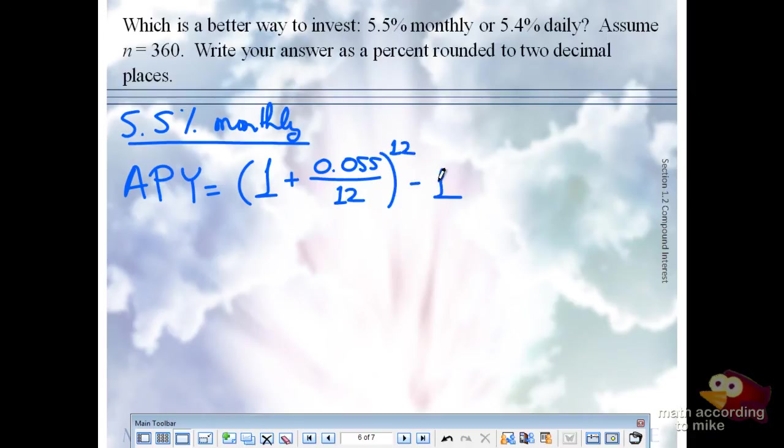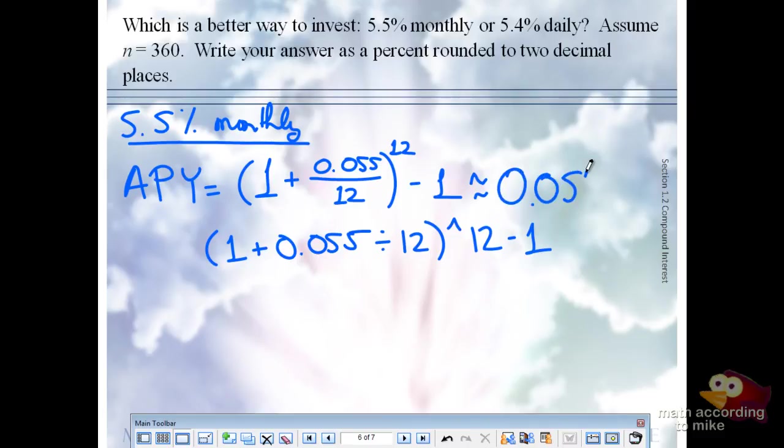So calculate the notation from left to right. If you put this in your calculator, you're going to get a decimal. You're going to get 0.0564079.